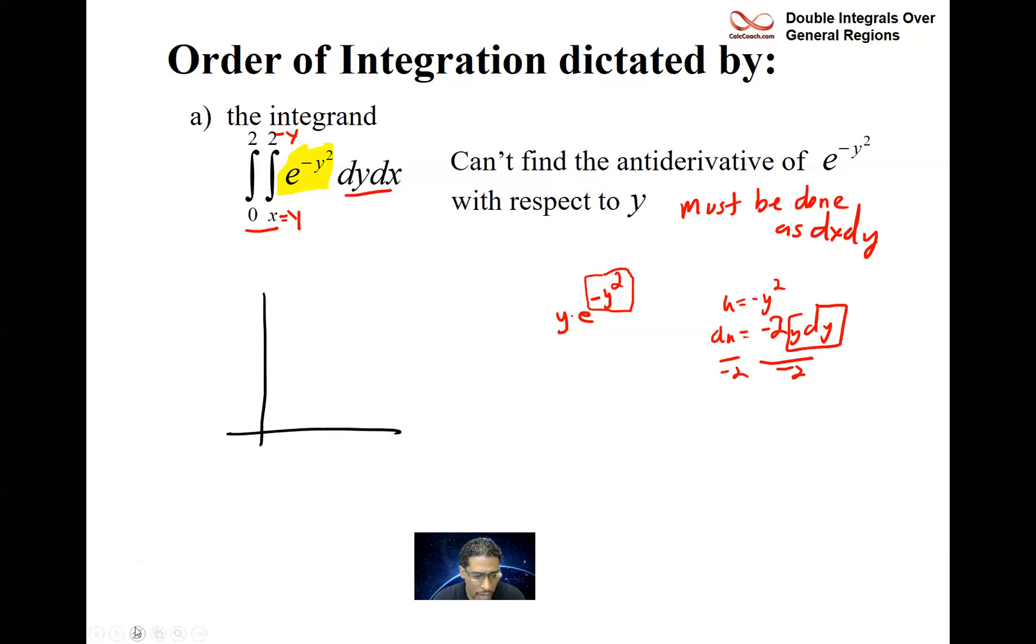So we have our x and y axis. Here is the y equals x. And then here is the y equals 2. Now they have it set up as a dy dx. We're going to switch it. But I just want you to know what the region looks like though. And so a dy dx is a vertical slice who gets moved horizontally. And these circles here are on your upper limit inside and your lower limit inside.